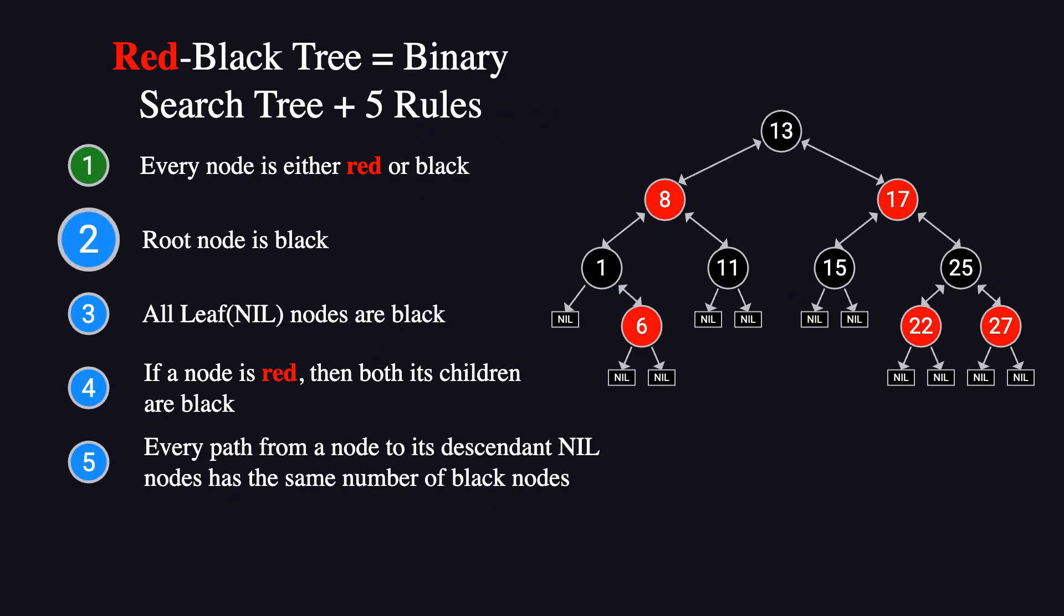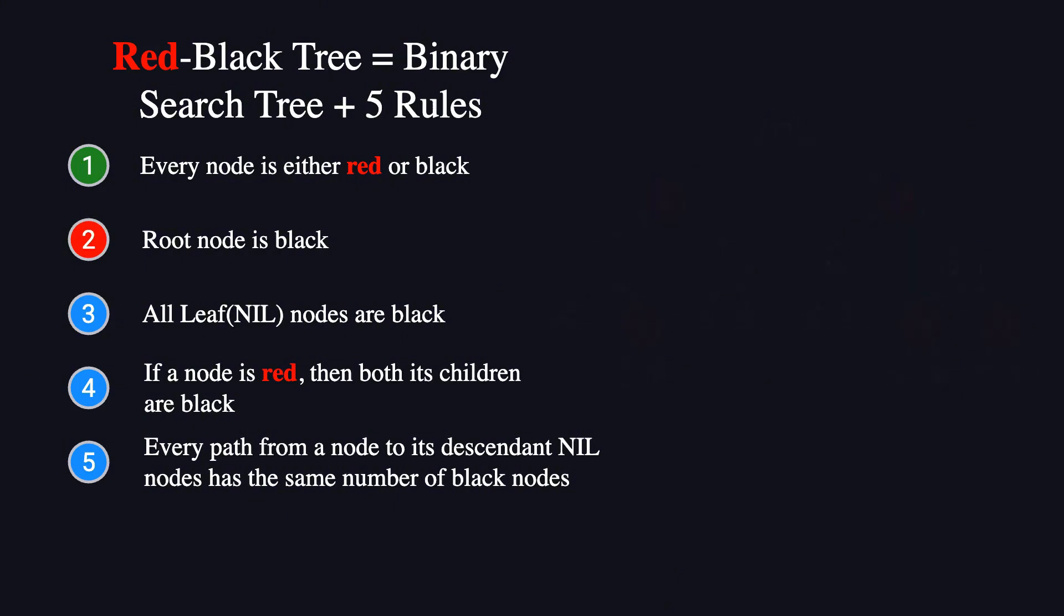Rule two states that the root must always be black. This rule could be violated if we insert a red node into an empty tree, because that red node would become the root. But fixing this is easy. We simply recolor the root to black.